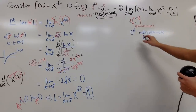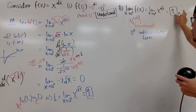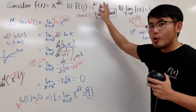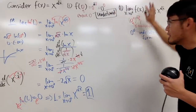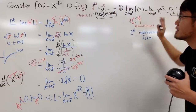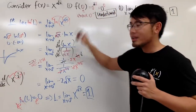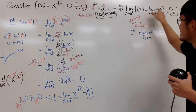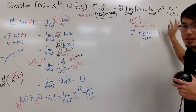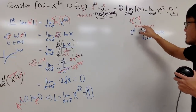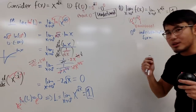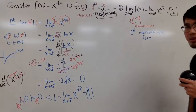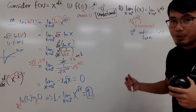Don't get confused between 0 to the 0 being 1 versus 0 to the 0 being undefined. You have to remember which situation you're in. This is calculus — a limit. The regular computation has exact 0. In the limit situation, the 0 means a very small number really close to 0, like 0.00001. That's the key distinction.